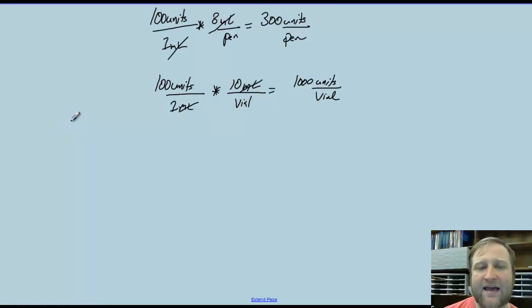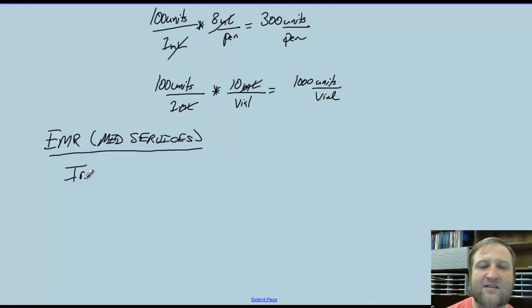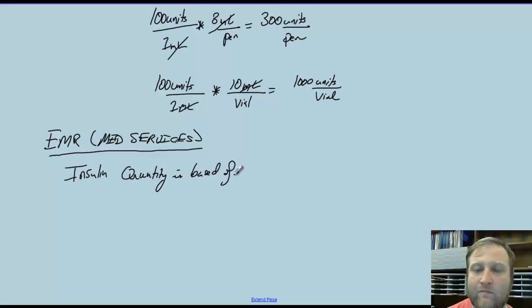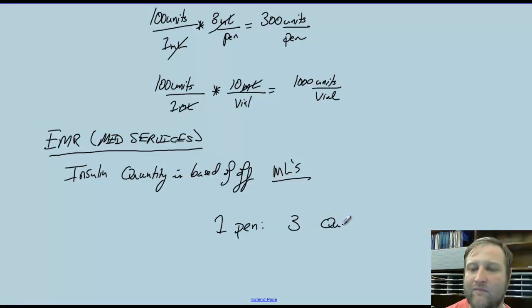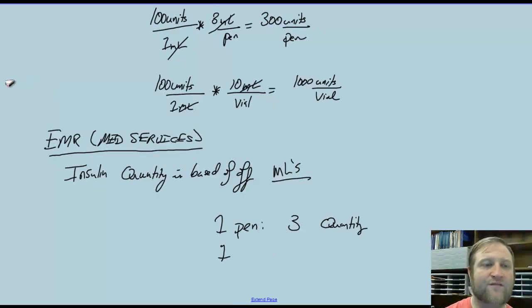Last, remember that in our EMR — MedServices — when we input prescriptions, the insulin quantity is based off of mLs. So for every 1 pen you give the patient, you're going to input a quantity of 3. For every 1 vial you give the patient, you're going to input a quantity of 10.